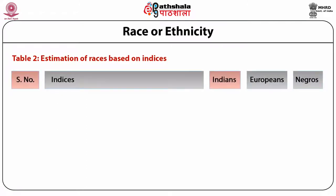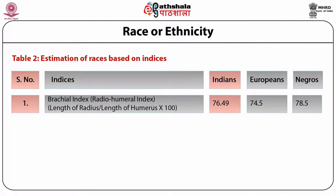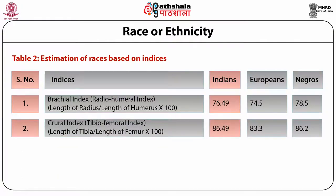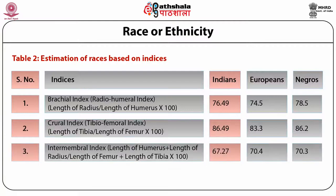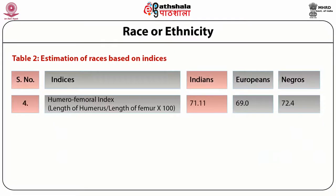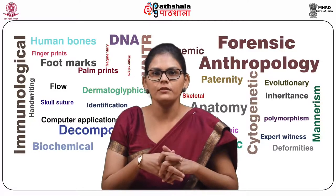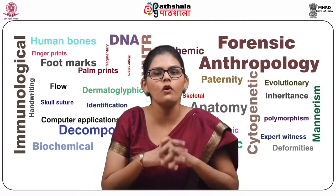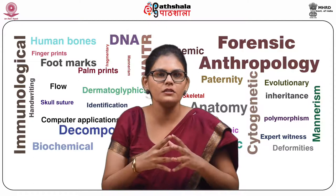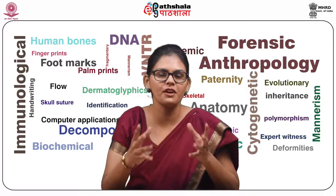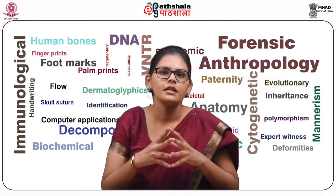These races can also be estimated on the basis of a number of indices which include the brachial index (ratio of humeral index), crural index (tibiofemoral ratio), intermembral index, humerofemoral index, and cephalic index, which is the ratio of the maximum breadth to the maximum length of the skull multiplied by 100. In addition to racial identification, religious association can also be identified on the basis of different features including ornamentation and dressing patterns.